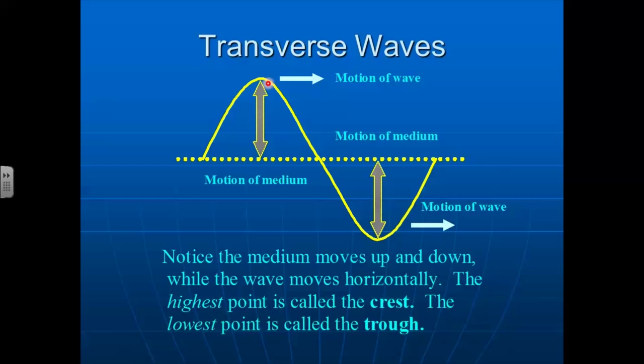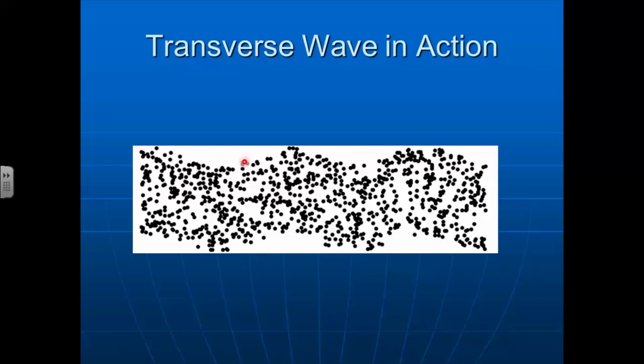The highest point up here is called the crest, and the lowest point is called the trough. Here's a little animation of what it would look like. If you look at any of these little individual dots, pick out any random dot in this animation, and you'll notice that this dot just moves up and down repeatedly. It's oscillating up and down. But the wave is traveling forward. And that's why it's the transverse wave.